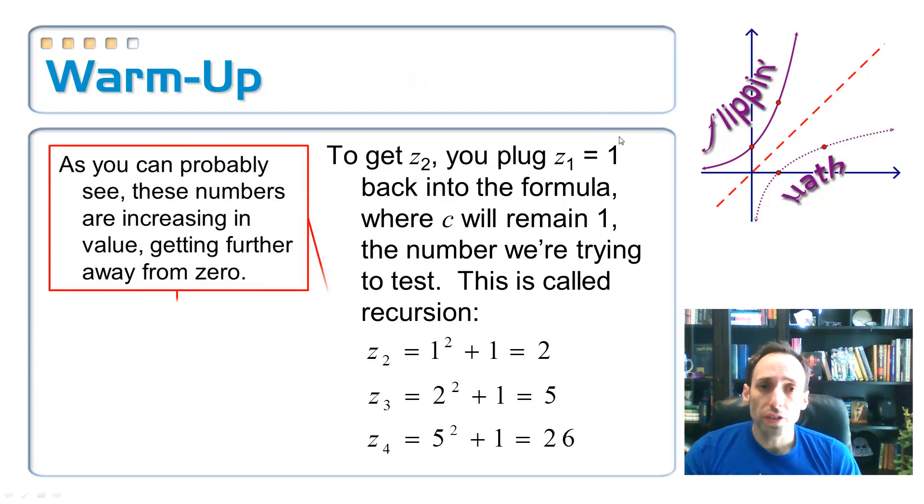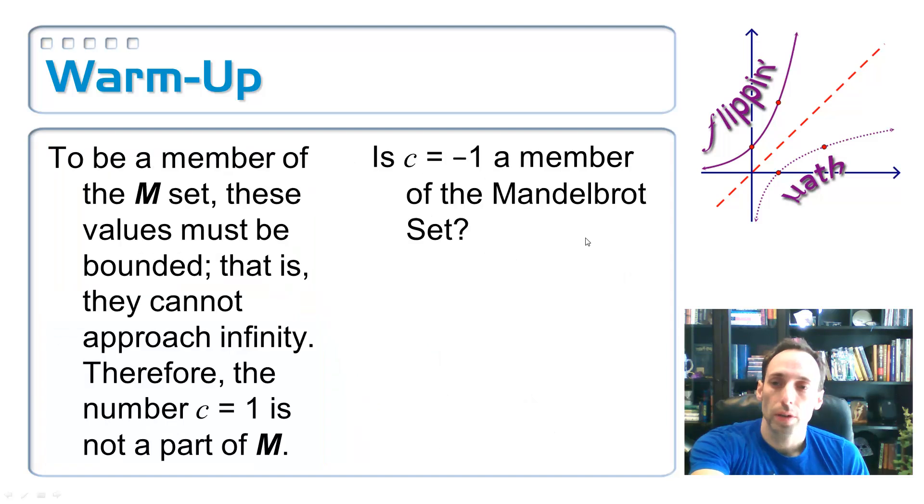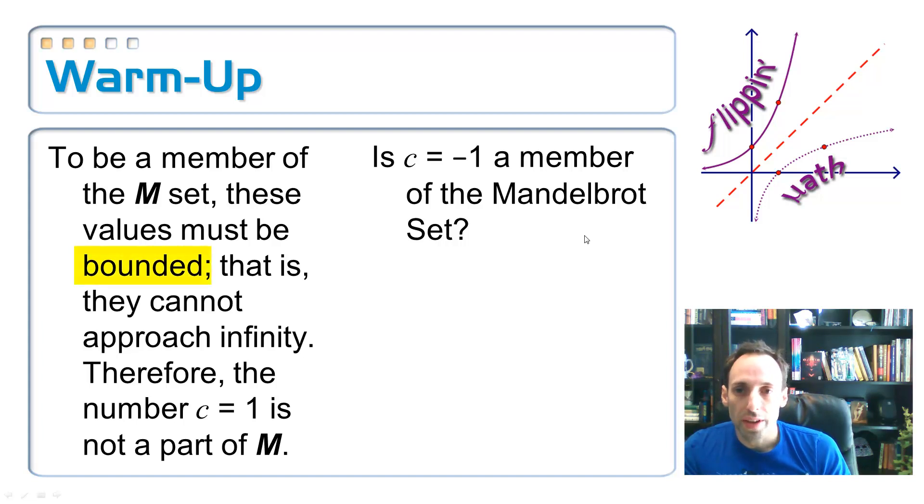So as you can see, these numbers are just getting bigger and bigger and bigger. They're getting further and further away from zero. So if you're going to continue this, it would approach infinity, right? If you keep iterating, if you keep taking the answer and putting it back into the equation, it's going to approach infinity. So what we say is, to be a member of that Mandelbrot set, those numbers have to be bounded whenever you put it into the equation. What that means is that they cannot approach infinity. They have to stay within some certain level, some certain interval. So since C is getting bigger and bigger and bigger, C equals one, we know it's not part of the Mandelbrot set.